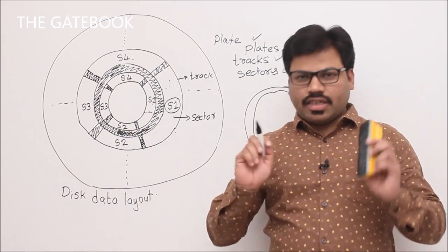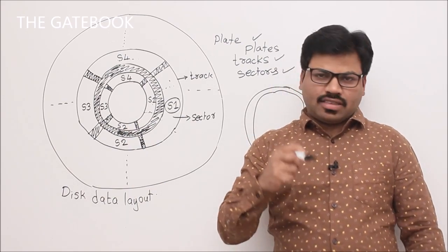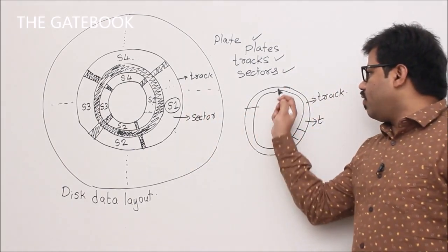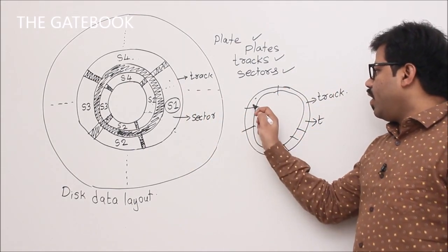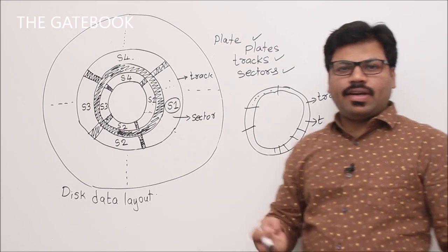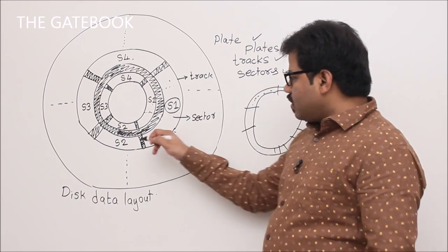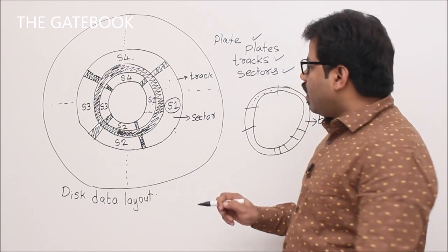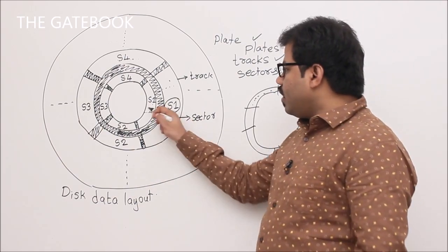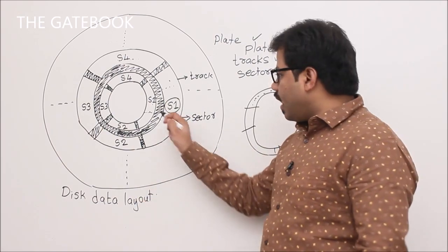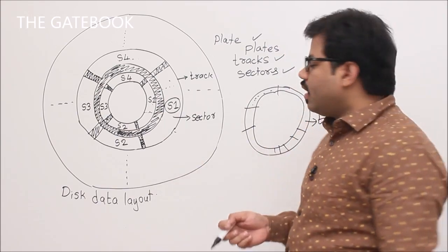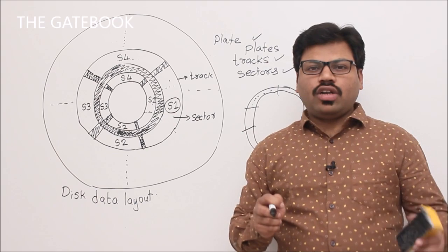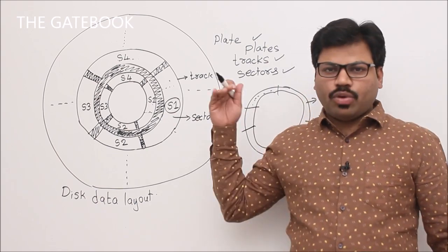Each track is divided into sectors. So a disk is a set of plates, each plate has a set of tracks, each track has a set of sectors, and in each sector we store the data. Between sectors there is an inter-sector gap, and between tracks there is an inter-track gap.